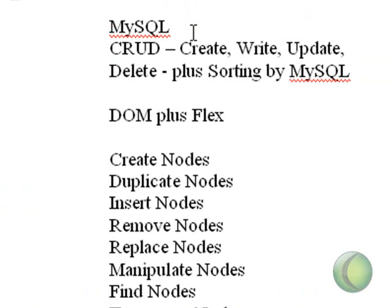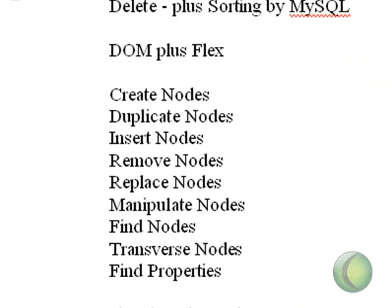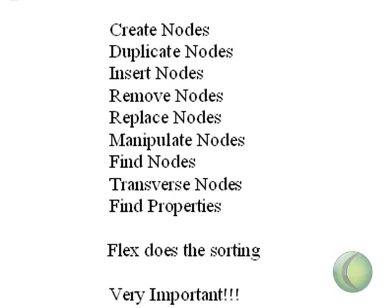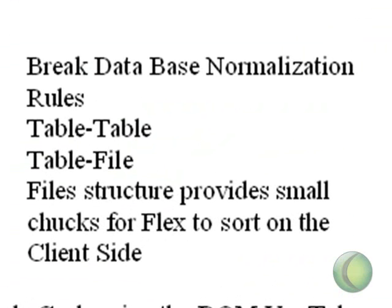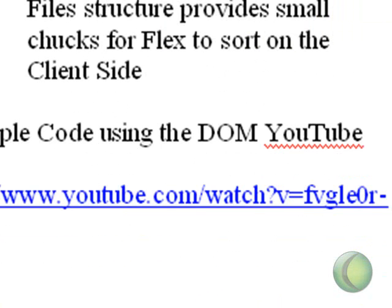Let me say a few things about why this is so important. Typical in MySQL programming, you have the CRUD — create, write, update, and delete. But with Flex, you have the ability to basically mimic a SQL database because Flex will sort on the client side. So the DOM will create, duplicate, insert, remove, replace, manipulate, find, and traverse nodes. Flex can do the sorting. However, what's very important is that you can't do typical database normalization in this situation. About two years ago I wrote a Flex blog using very standard database normalization, and you waited 30 minutes for everything to sort. So there has to be a different way of doing this to speed things up, and to do that you have to break database normalization. As opposed to the typical table-table, you have to use a table-file configuration. As we go through the programming, we'll explain exactly what that means.